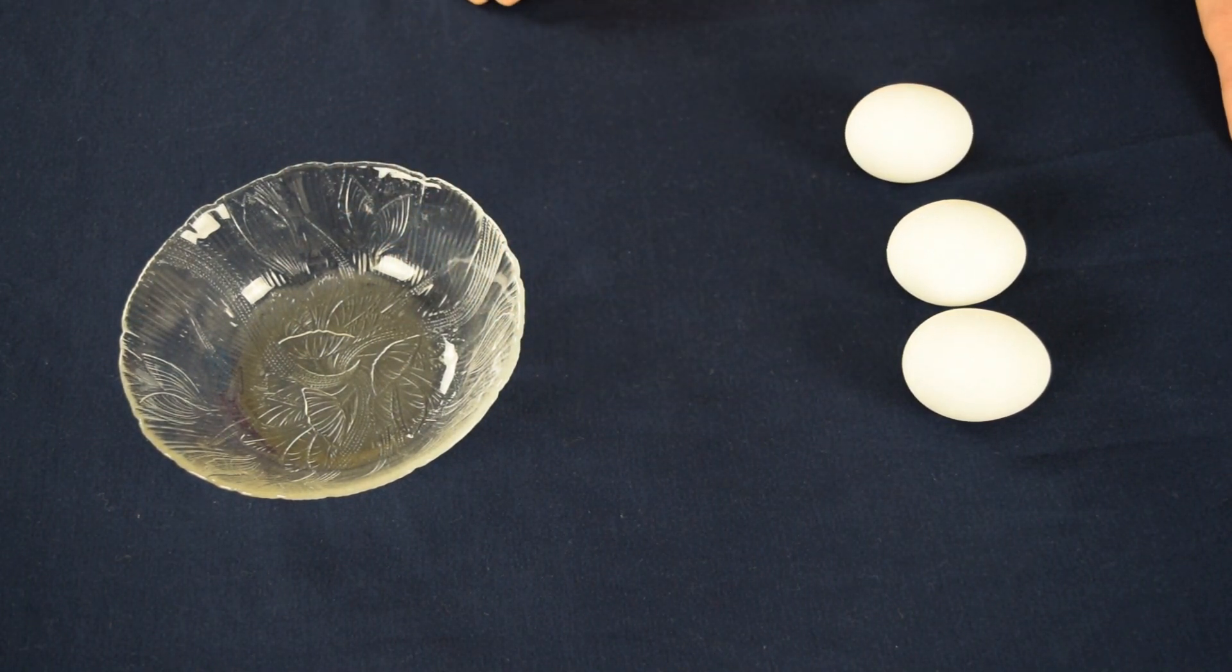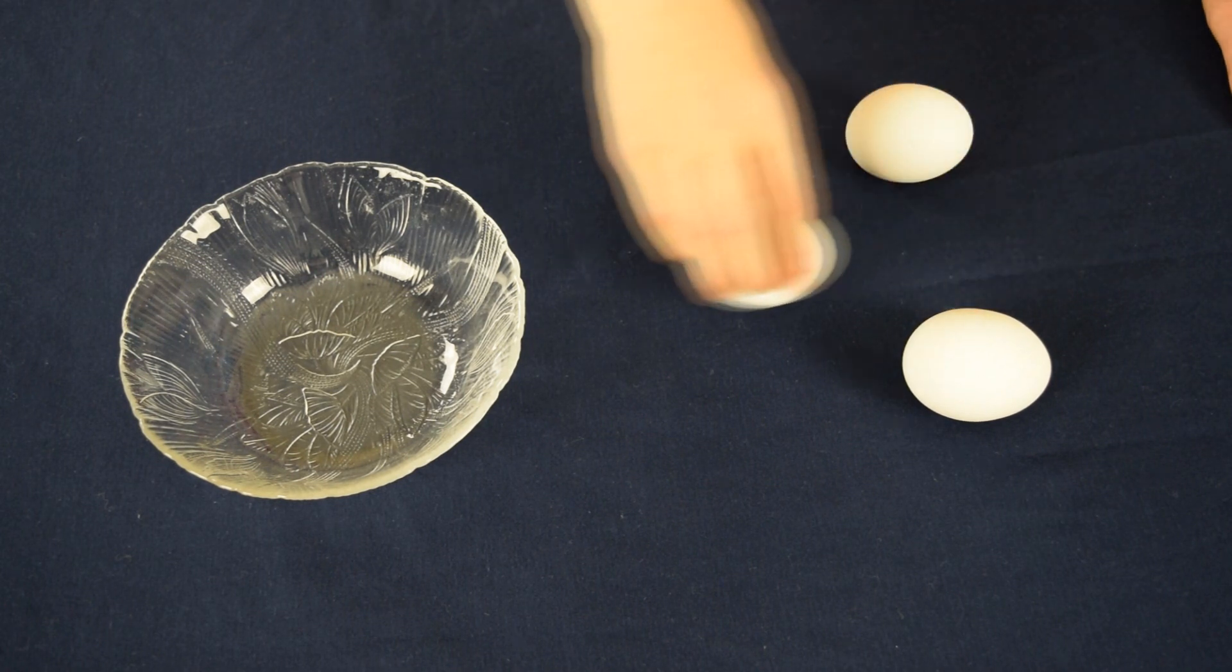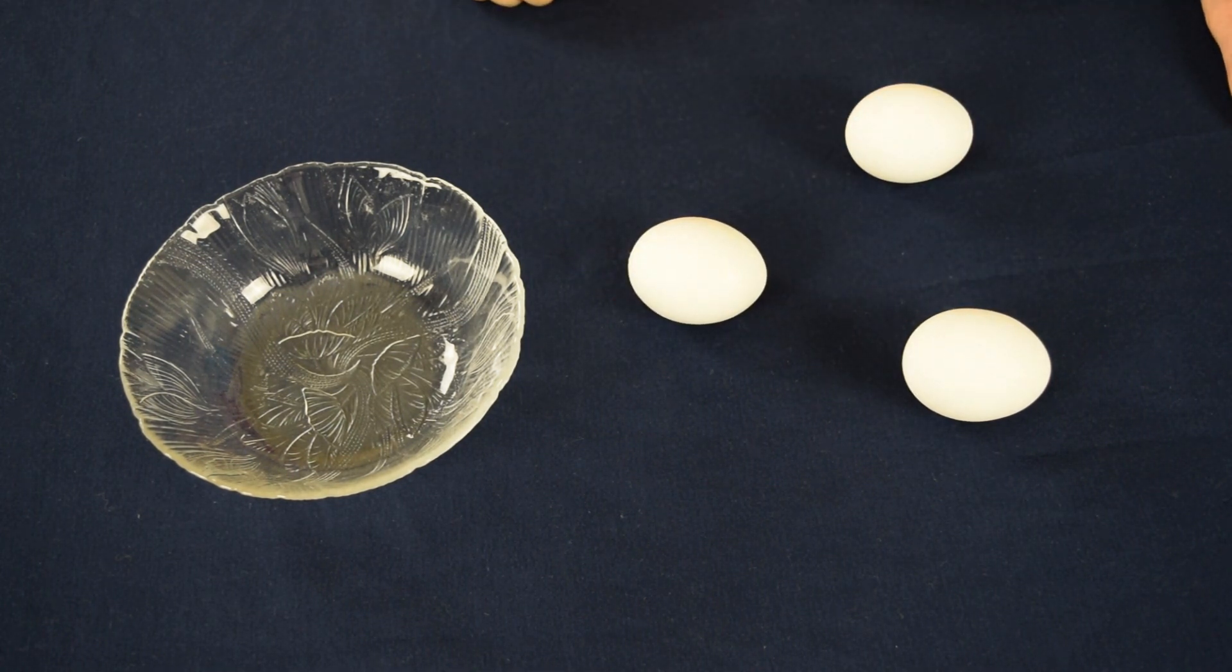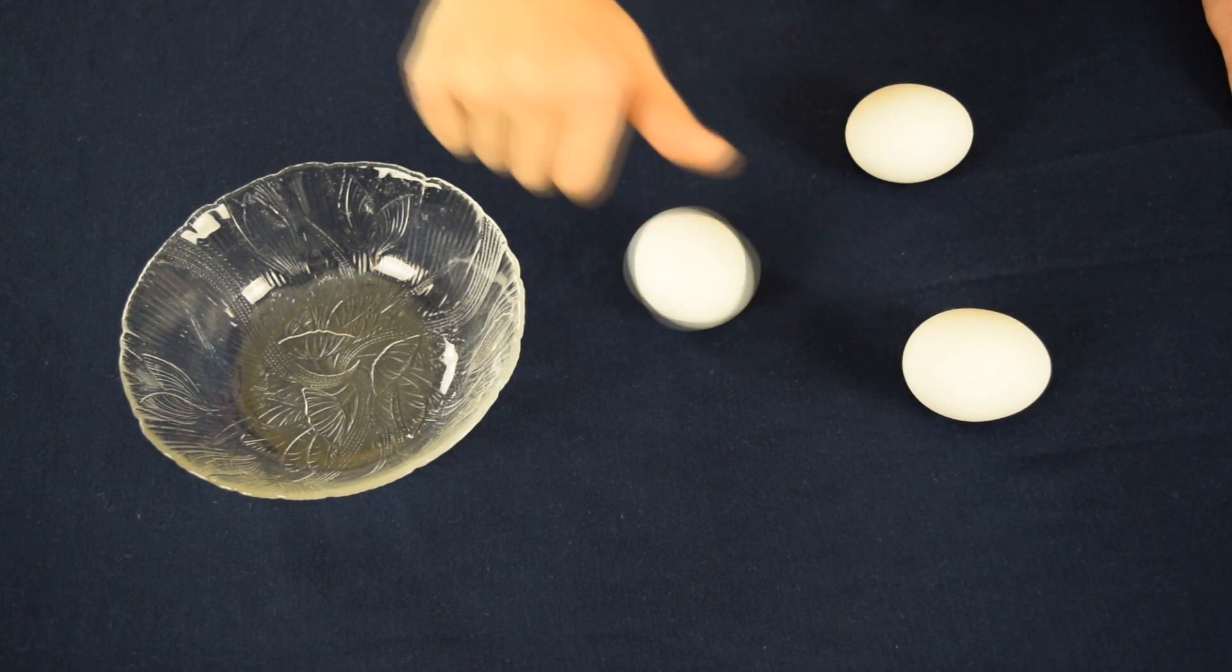Like I mentioned, there's two raw eggs and one hard-boiled egg. So which egg behaved differently than the other two? That's right, it's the hard-boiled egg. And when you spin it, it continues to spin.